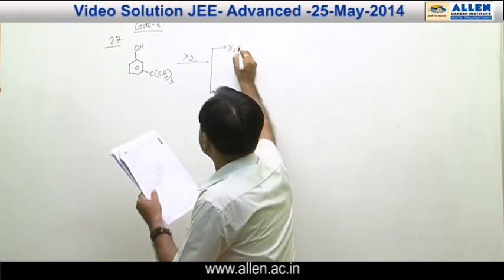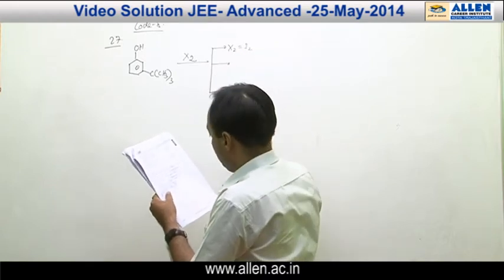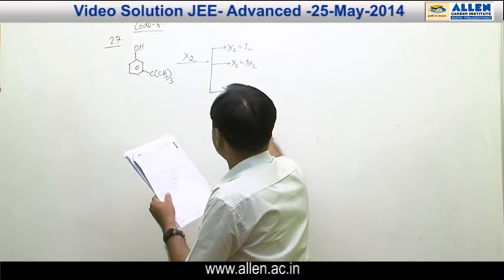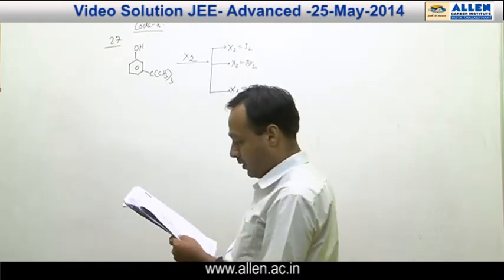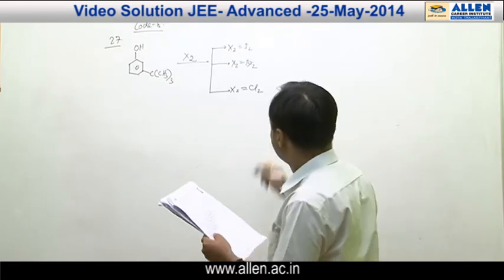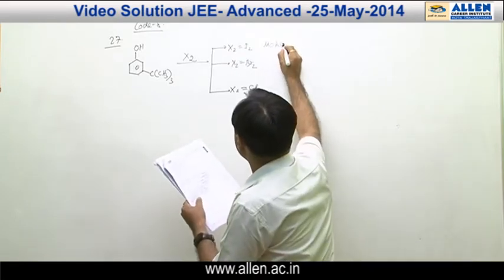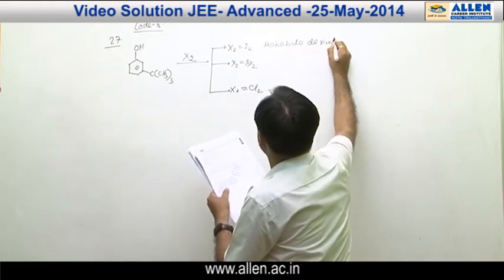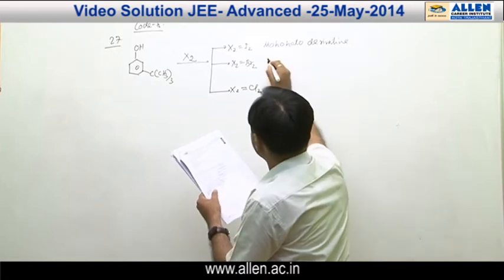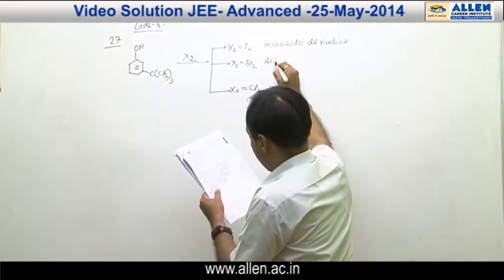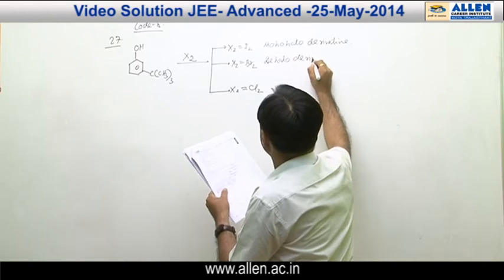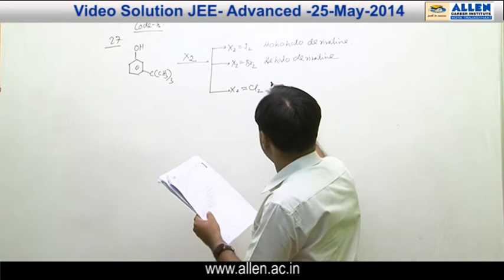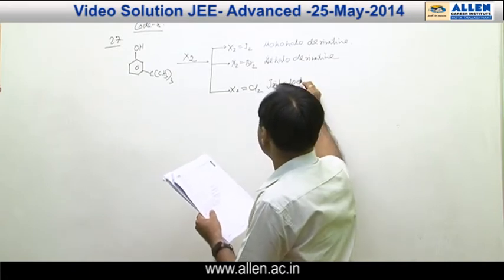X2 is I2, that is iodination. X2 is Br2, that is bromination. X2 is Cl2, that is chlorination. In iodination, the product is monohaloderivative. When X2 is Br2, the product is dihaloderivative. When X2 is Cl2, the product is trihaloderivative.